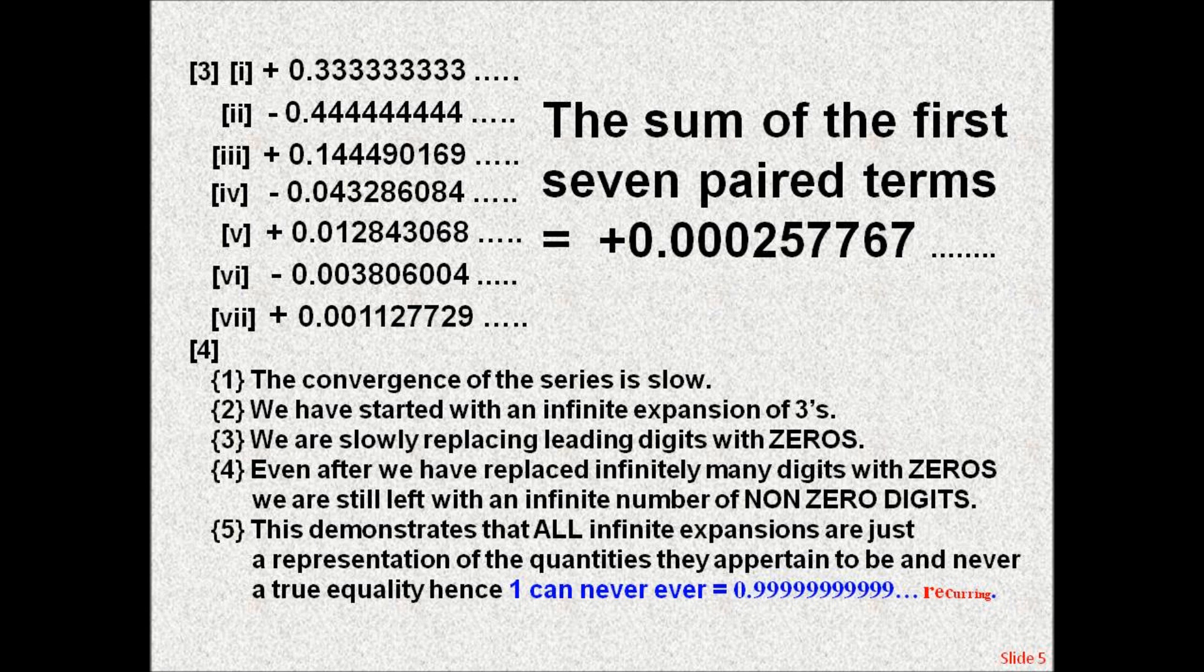we are still left with an infinite number of non-zero digits. 5. This demonstrates that all infinite expansions are just a representation of the quantities they appertain to be, and never a true equality. Hence, one can never ever equal 0.99999 recurring.